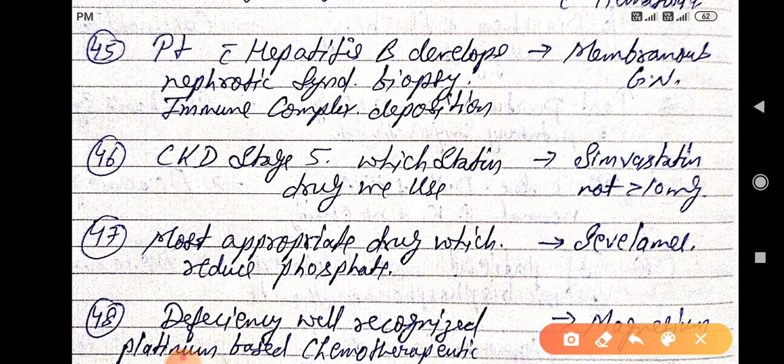Patient with hepatitis B develops nephrotic syndrome, biopsy, immune complex deposition. It is associated with membranous glomerulonephritis.